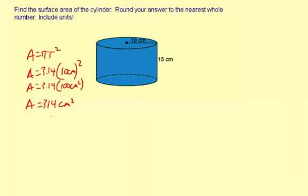So finding the surface area, there are two circles, so another one is going to be 314 centimeters squared. And we're going to add those two together as part of finding the total surface area.